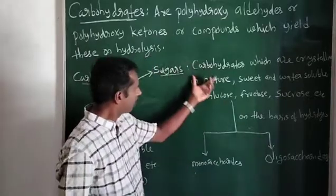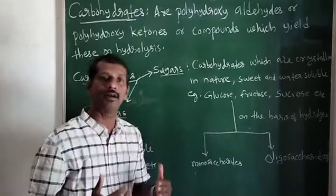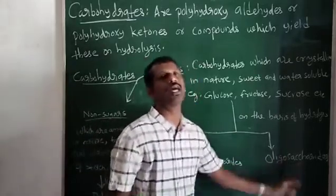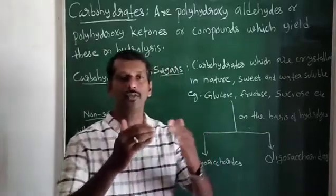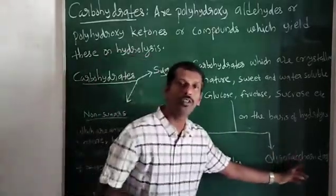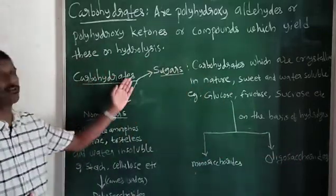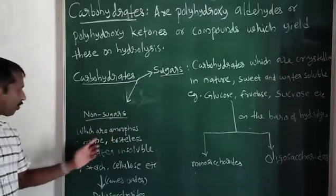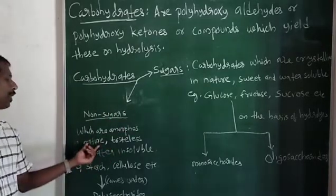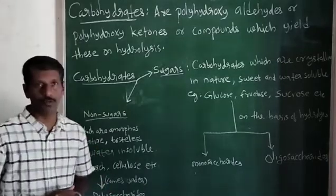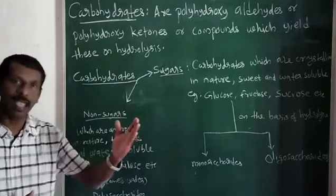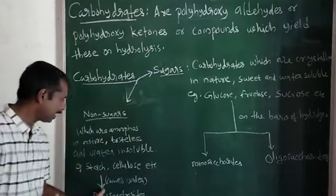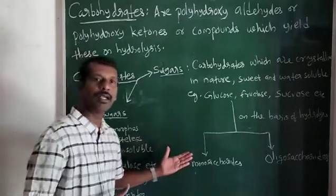Sugars, on the basis of hydrolysis, are classified into two types: monosaccharides and oligosaccharides. The second type of carbohydrates are non-sugars. Non-sugars are carbohydrates that are amorphous in nature — not crystalline — tasteless, and water insoluble. Examples are starch, cellulose, etc. These non-sugars come under polysaccharides.